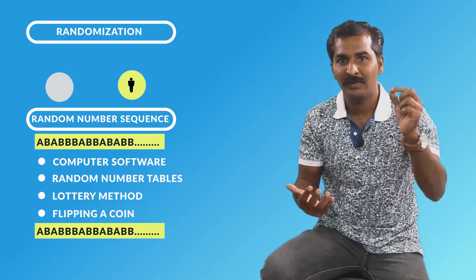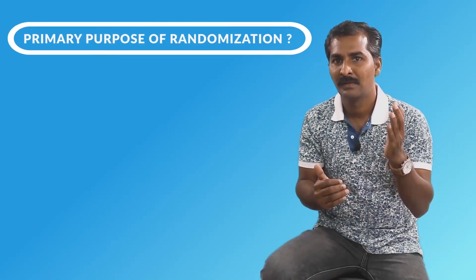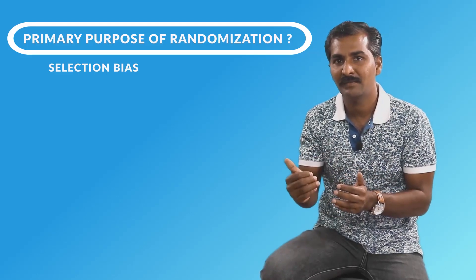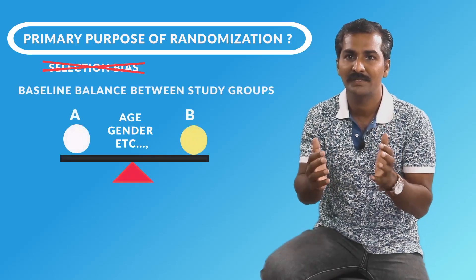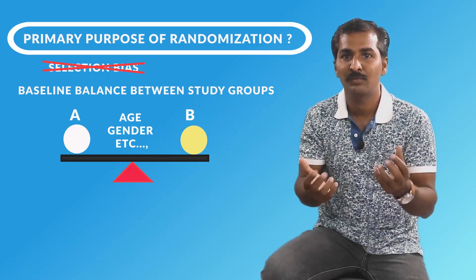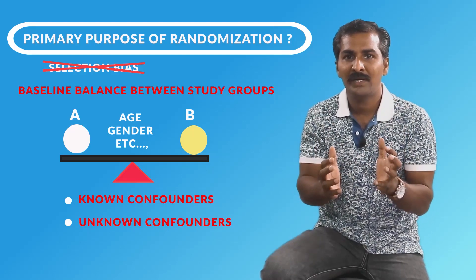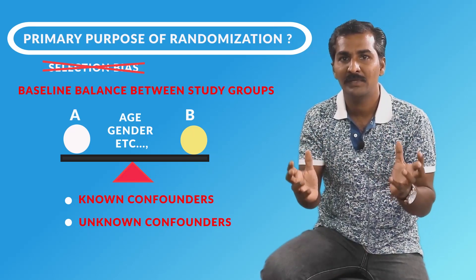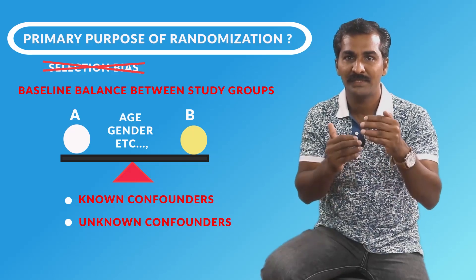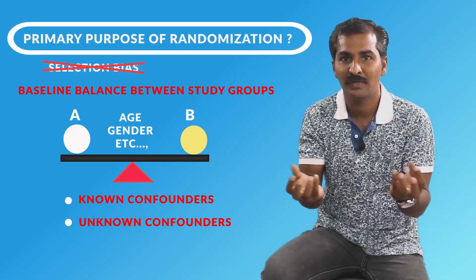With this random sequence, I don't have any control over which group my first, second, or third participant will go into. The primary purpose of randomization is not just to address selection bias — it is to achieve good baseline balance between the two study groups with respect to potential known and unknown confounders. If your sample size is large enough and the randomization process is effective, you achieve good baseline balance, and confounding is taken care of.